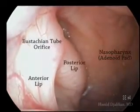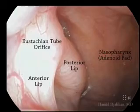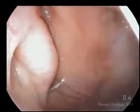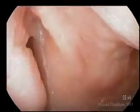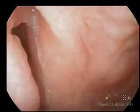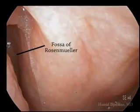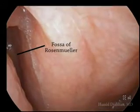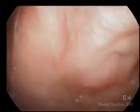Here we reach the nasopharynx. Here we can see the anterior posterior lip of the eustachian tube and the nasopharynx. We want to look into the fossa of Rosenmüller, which is where most commonly nasopharyngeal carcinomas will start.